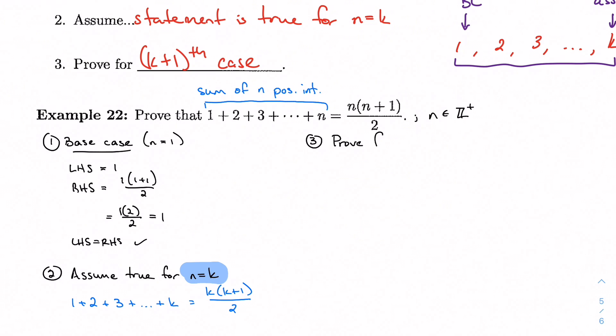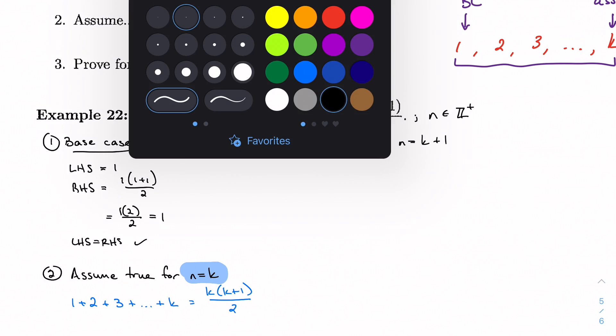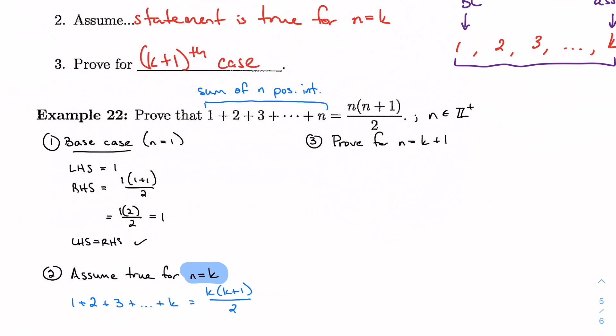That's what I'm going to say next. Prove for n equal to k plus 1. And this is what we call the inductive step. And we want to use our assumption to do that. Use our assumption from 2.